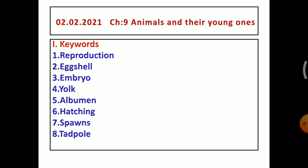Again I will read out first keyword, reproduction. Second one, eggshell. Third one, embryo. Fourth one, yolk. Fifth one, albumen. Sixth one, hatching. Seventh one, spawns. Eighth one, tadpole.